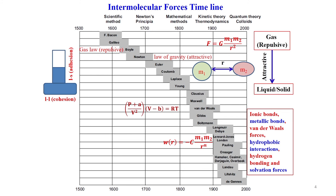The 17th century is considered the first era of scientific methods, starting with Galileo, Boyle's law, and Newton. They derived breakthrough theories: Boyle's law and the gas law, PV = RT constant. The gas law states that interactions between gas molecules are repulsive in nature, but when Newton discovered the law of gravity, it says there is always an attractive interaction between two different molecules.